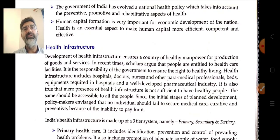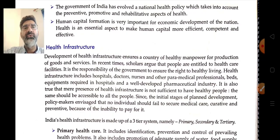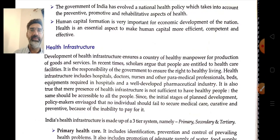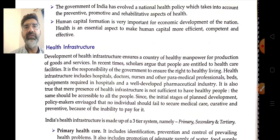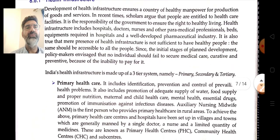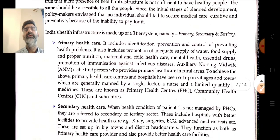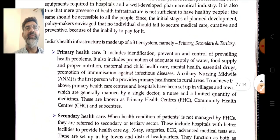Since the initial stages of planned development, policy makers believed that no individual should fail to secure medical care — curative and preventive — because of inability to pay. In our country, the health infrastructure is made up of a three-tier system: primary, secondary, and tertiary.